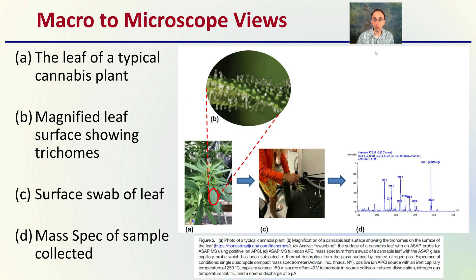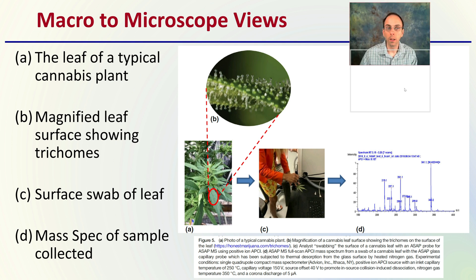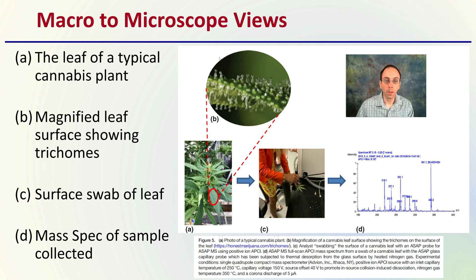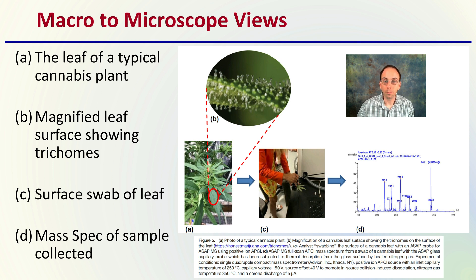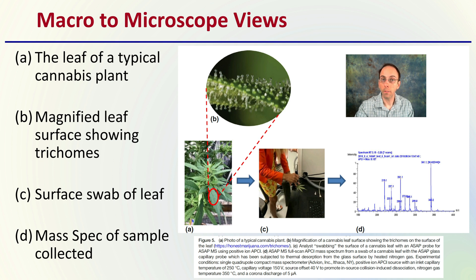Looking at the macro to microscopic views, we can see the leaf of a typical cannabis plant, then zoom in to show the individual trichome structures. Then we have the surface swab of that leaf conducted right here in the lab, followed by the mass spec of that sample collected. This is the general process of sampling the plant and developing those mass spec graphs — taking direct samples from the plant and getting an exact profile, which is great when evaluating what compounds particular cannabis plants may or may not be producing.